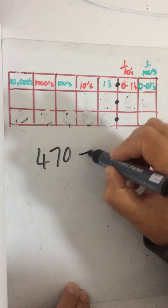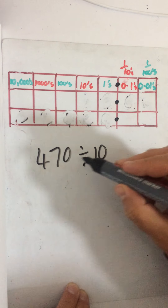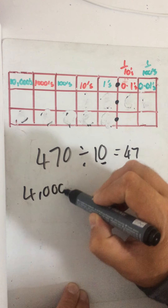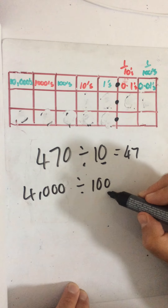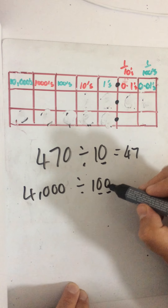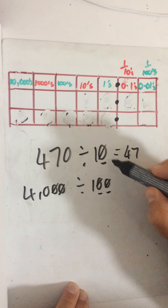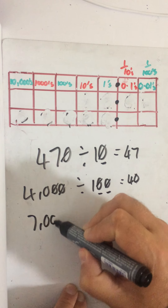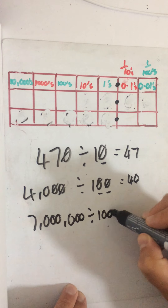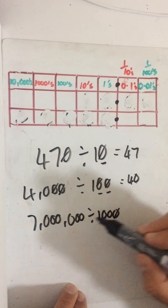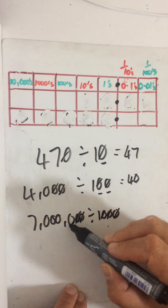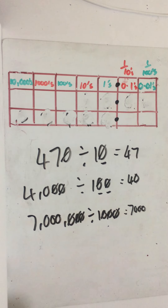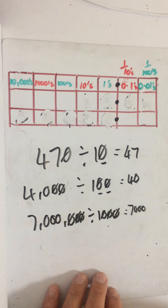If you had something like 470 divided by 10, because there's a zero here, we can cross a zero off — that would be 47. If we had 4,000 divided by 100, I've got two zeros here when I'm dividing, so I can cross off two zeros on each side — that leaves me with 40. If I had 7 million and I want to divide that by a thousand, I cross off three zeros on each side, and that gives me 7,000.